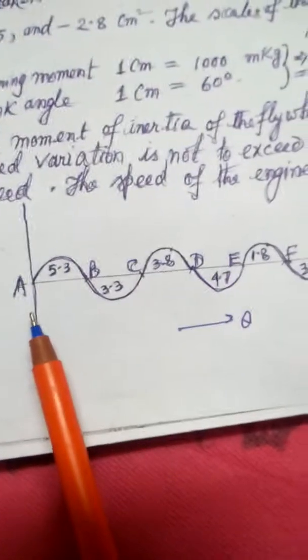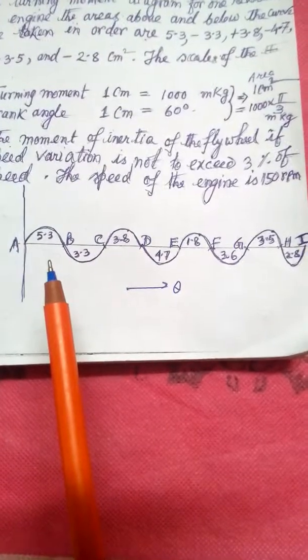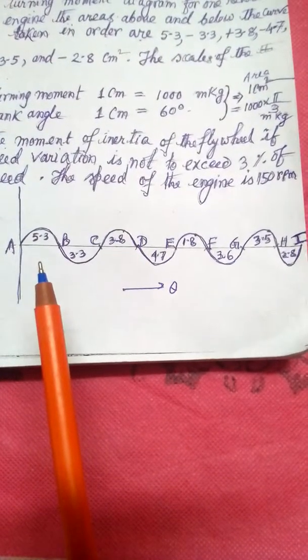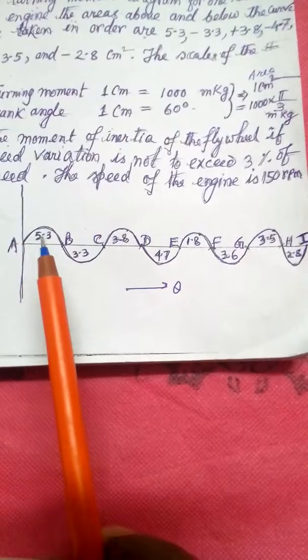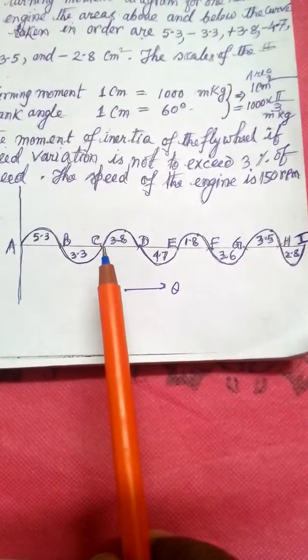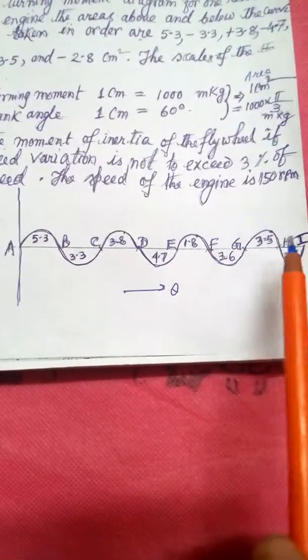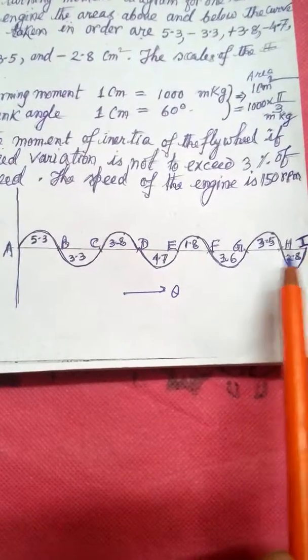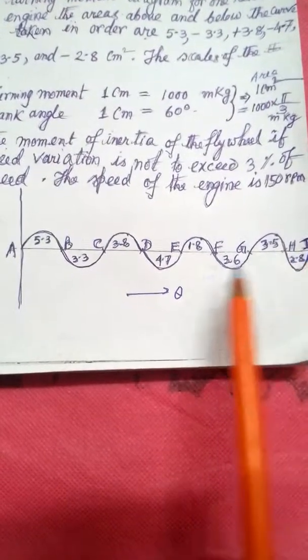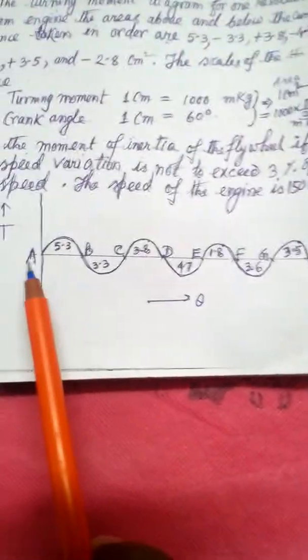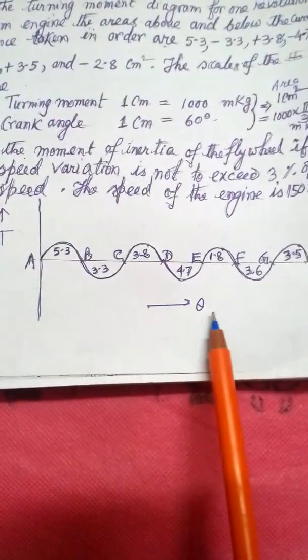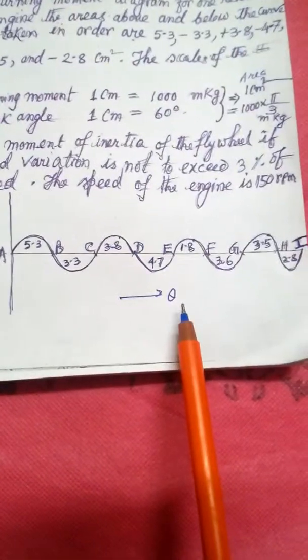Please draw the figure. This is A, B, these points intersecting with the horizontal up to I. This is H and I. This is T axis, this is theta axis. Let me solve the problem.